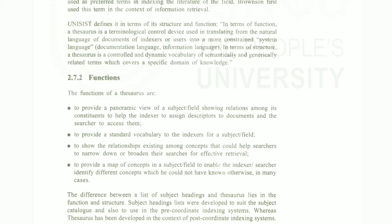Now we will talk about the UNISIST definition. In terms of function, a Thesaurus is a terminological control device used in translation from the natural language of documents or indexes into a more constrained system language. In terms of structure, a Thesaurus is a controlled and dynamic vocabulary of systematically and generically related terms.